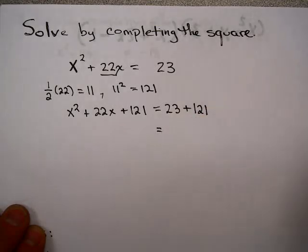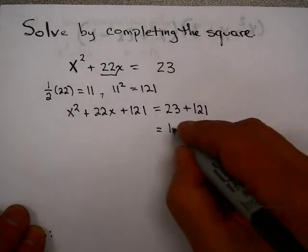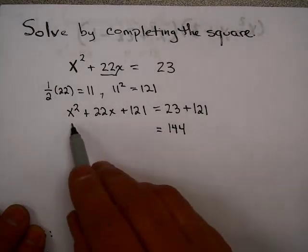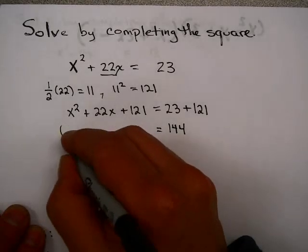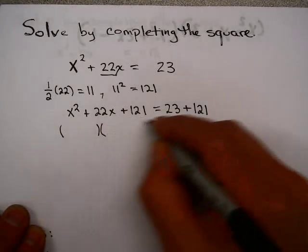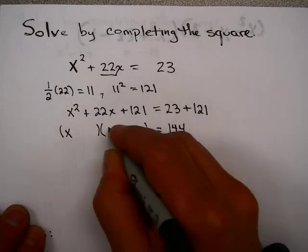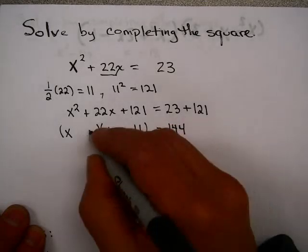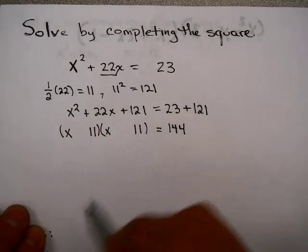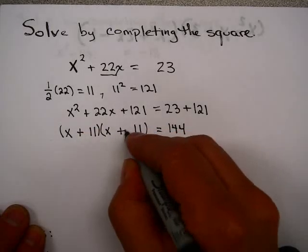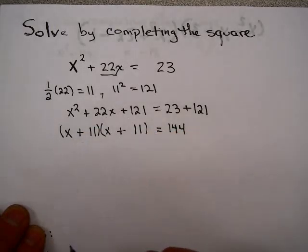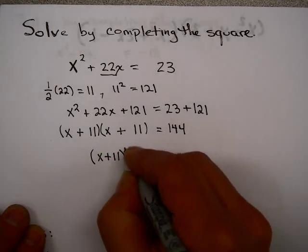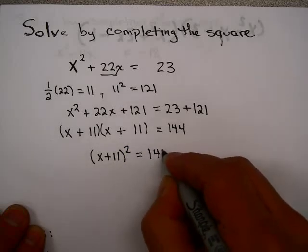23 plus 121 is 144. Now, if we factor this — you can use any method of factoring you like — you'll notice I have x squared as my first term, so I need an x and an x. And I need factors of 121 that add up to 22. That's 11 and 11, and it has to be plus and plus because we need positive 22. You'll notice that this is a perfect square trinomial.